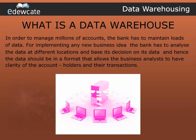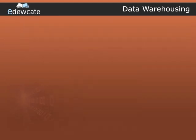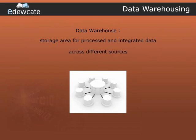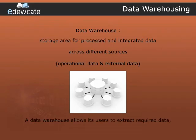Now where do they obtain all the required data from? The answer is obvious — a data warehouse. We can therefore define a data warehouse as the storage area for processed and integrated data across different sources, which could be both operational data and external data. A data warehouse allows its users to extract the required data for business analysis and strategic decision making.